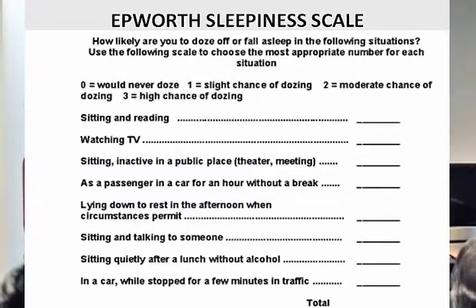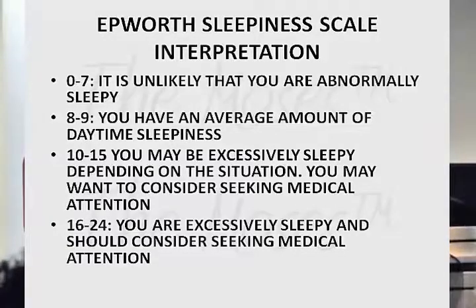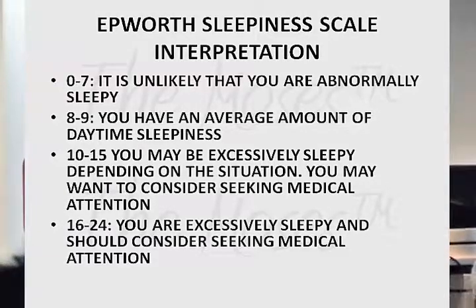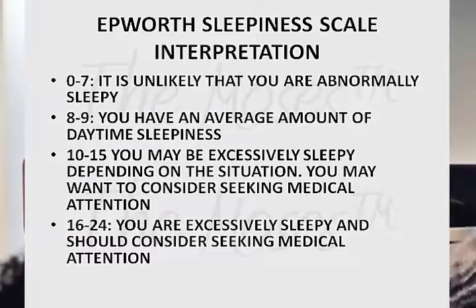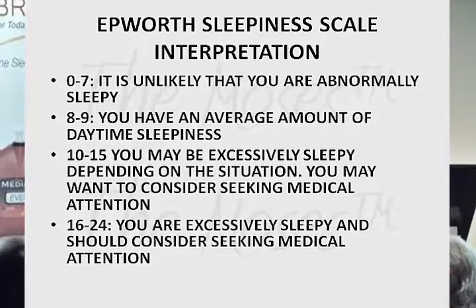The Epworth Sleepiness Scale: a score of 0–7 means it's unlikely you're abnormally sleepy; 8–9 is average sleepiness; 10–15 means you're excessively sleepy and may want to consider medical attention; 16–24 means they'll probably fall asleep before the end of the test. At Rush Medical School they do a one-hour intake, and it's amazing how many patients fall asleep during the intake.